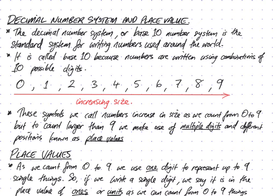The decimal number system, or base 10 number system, is the standard system for writing numbers that we use around the world.